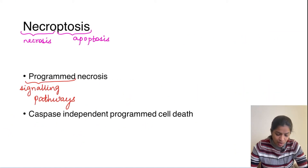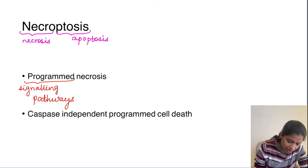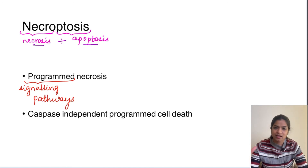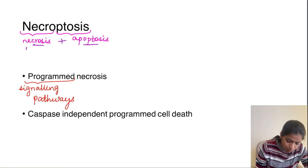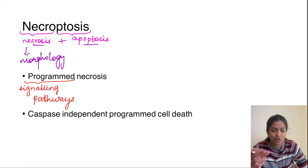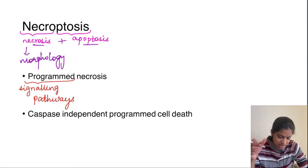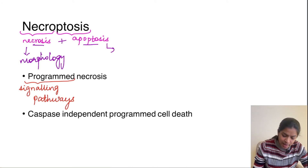Moving on to necroptosis — as the word itself suggests, it is a hybrid between necrosis and apoptosis. The morphology of necroptosis will be like that of necrosis: the cell membrane will be damaged, the cell will undergo swelling, and nuclear condensation will happen. Whenever there is membrane damage it leads to inflammation. So the same morphology of necrosis is seen in necroptosis as well. However, its signaling pathways are somewhat similar to that of apoptosis.